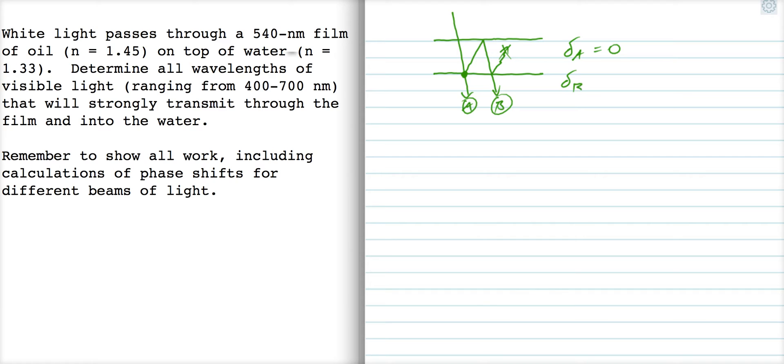With beam B, we've got two possible reflections. Now, looking at the problem, it says that light passes from air into oil and into water.